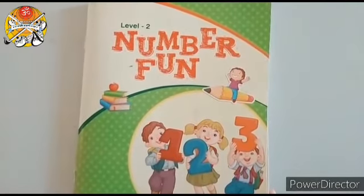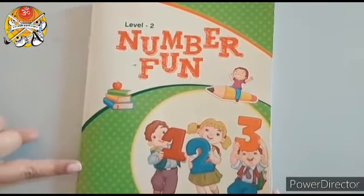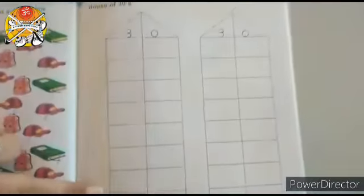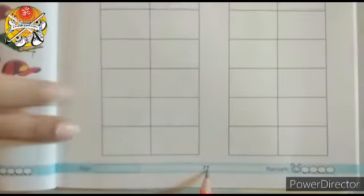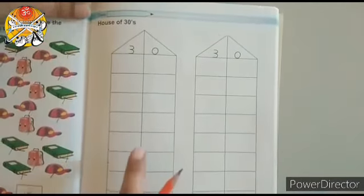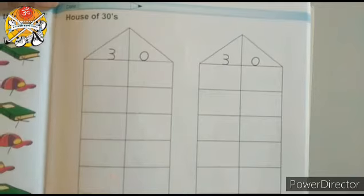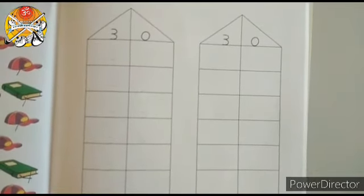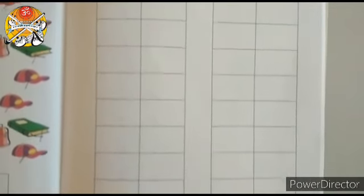Children, now let's learn house of 30 in your textbook. So this is your number one textbook. And on page number 77, there is topic of house of 30. So there are 2 houses given. And in the first house, dotted numerals are given. So, let's trace it.